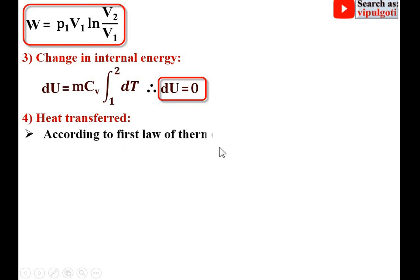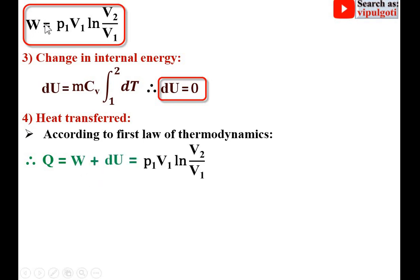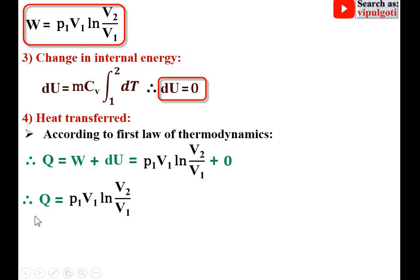Next, heat transfer. According to the first law of thermodynamics, Q = W + dU. We already derived the work done as P1V1 ln(V2/V1), and dU = 0. So Q = P1V1 ln(V2/V1). This is a very important relation for heat transfer during the constant temperature process.